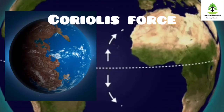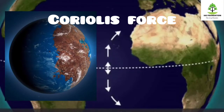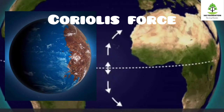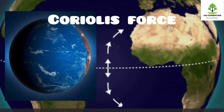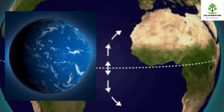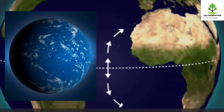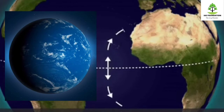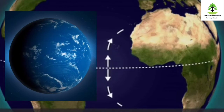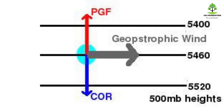Now we will see the Coriolis force. The Coriolis force is due to Earth's rotation from west to east. The pressure gradient force drives wind perpendicular to the isobar, straight from the high pressure region toward the low pressure region.